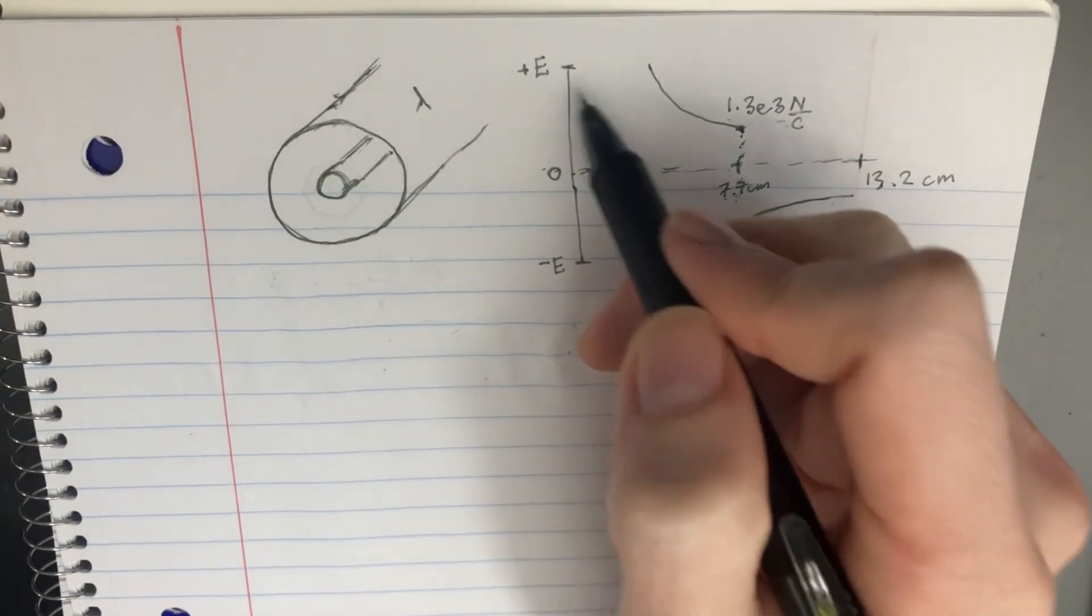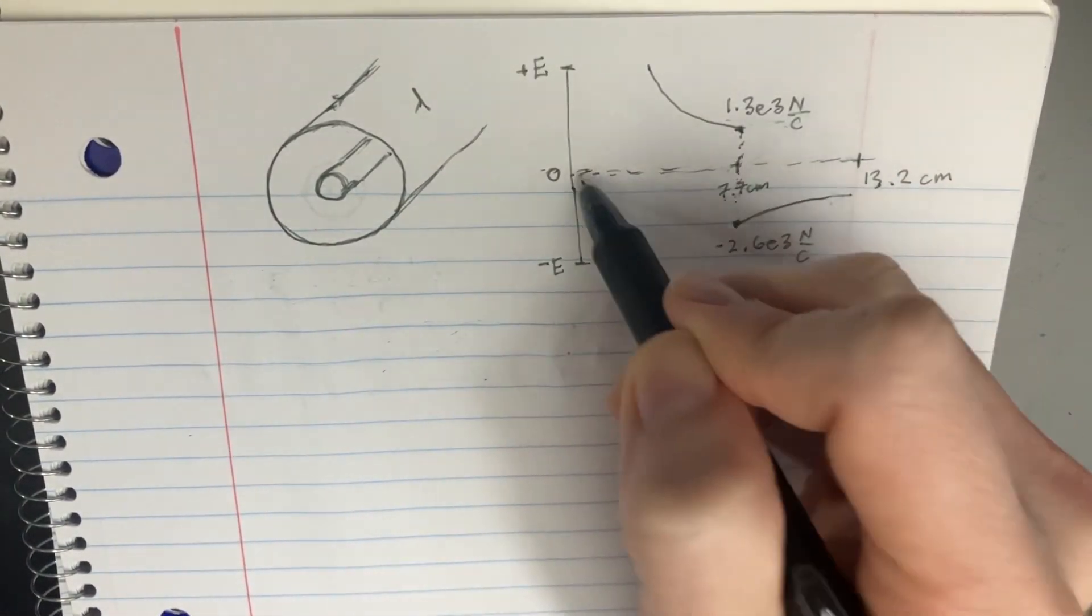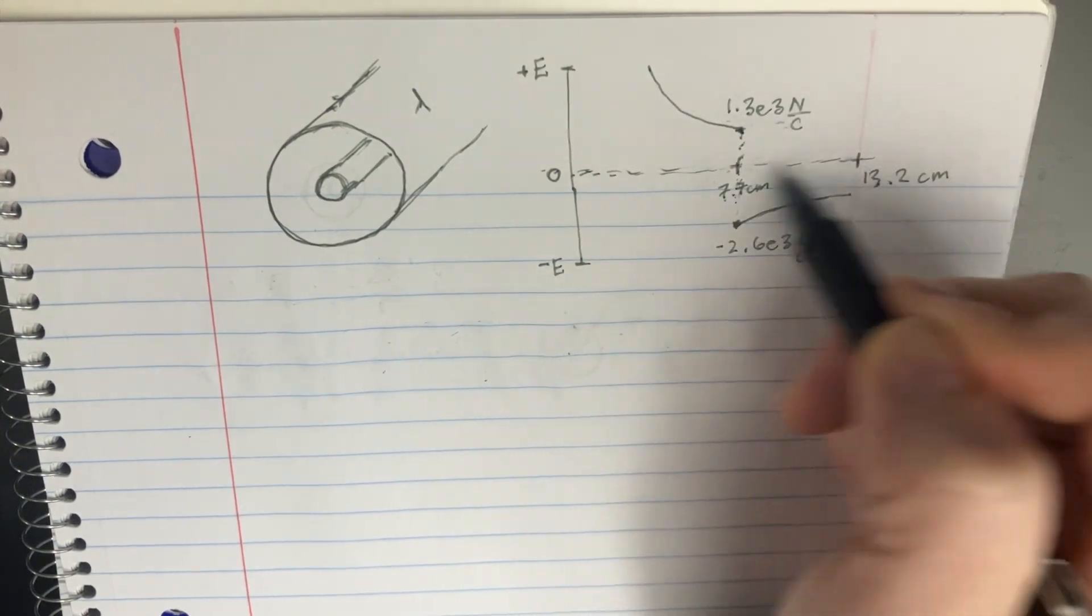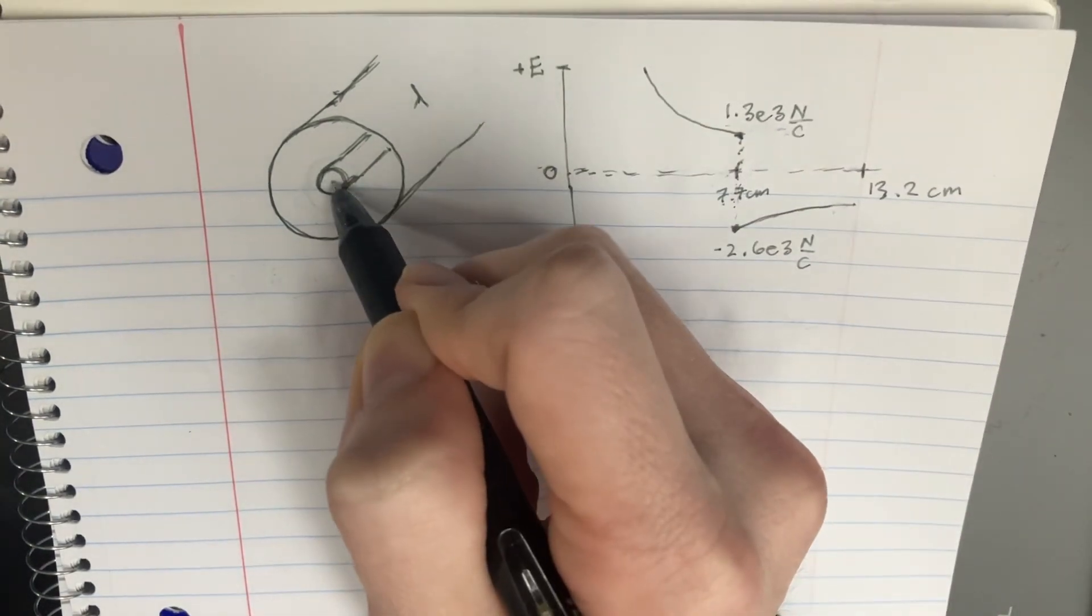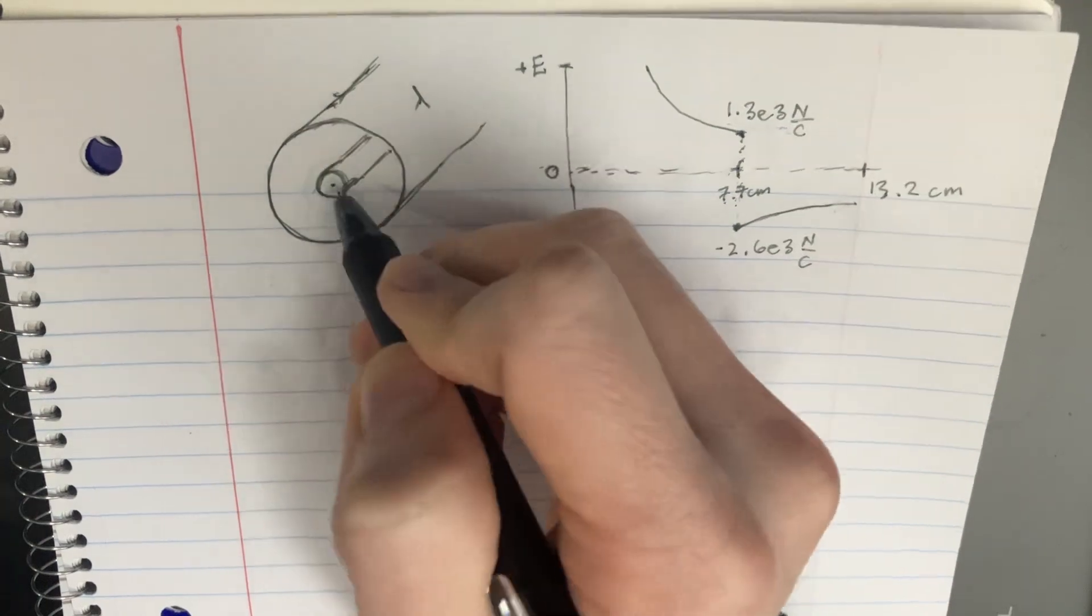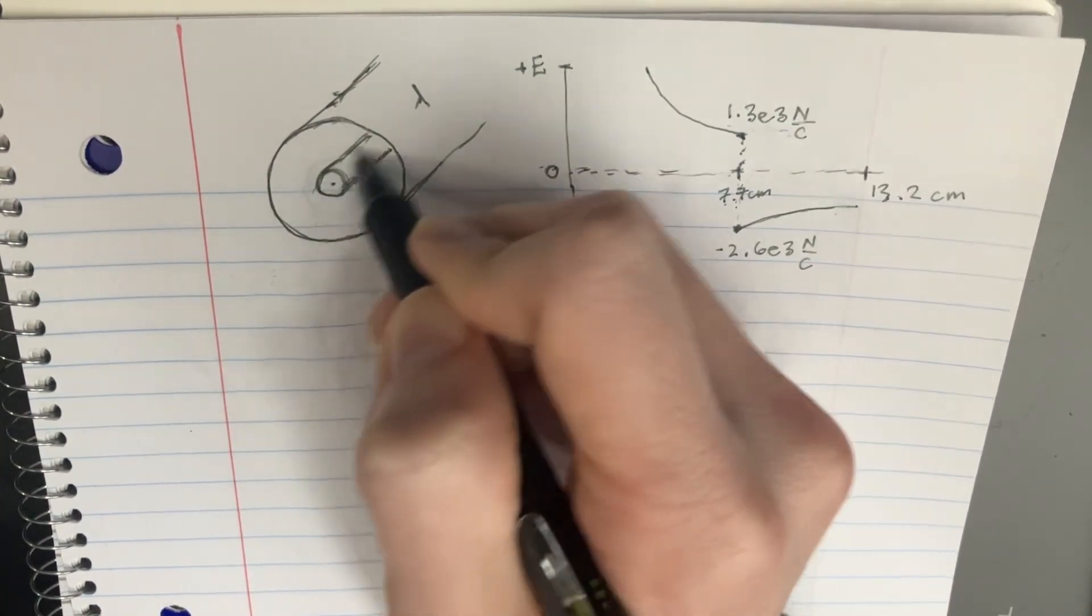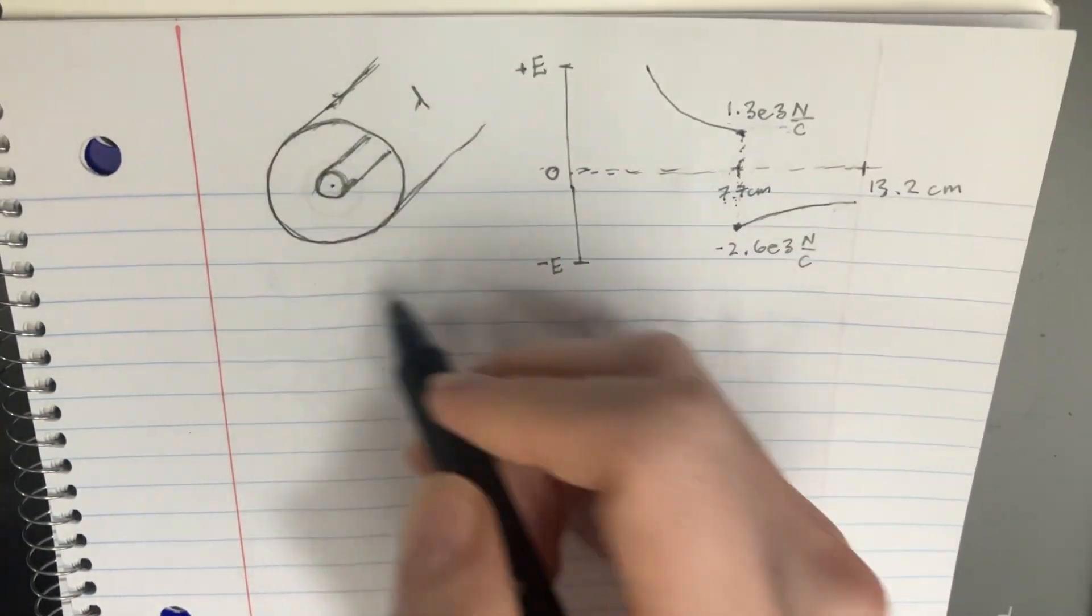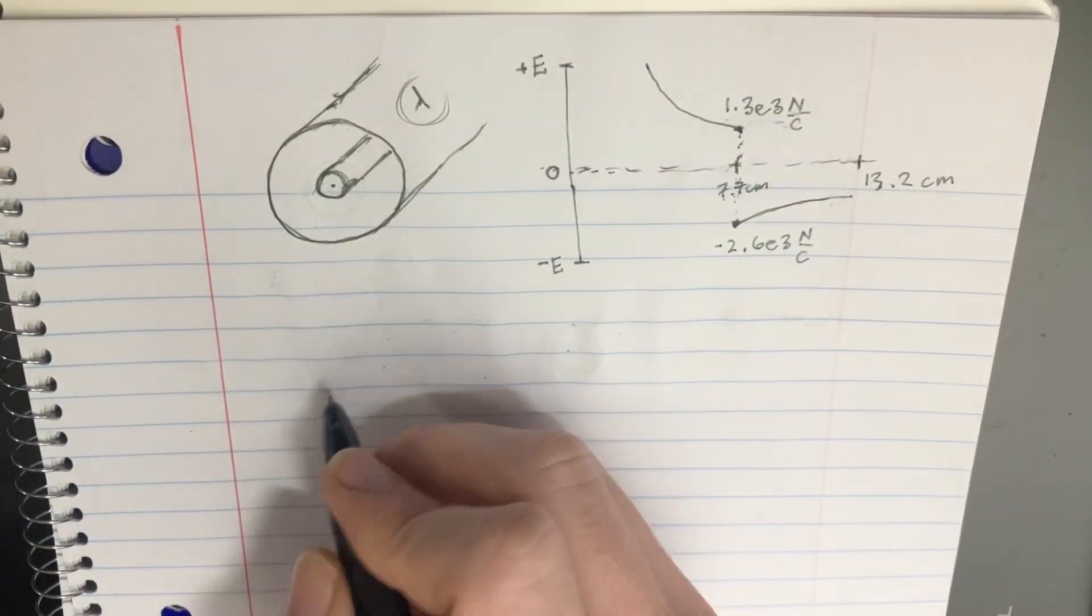So for this problem, we're given the electric field at certain distances from the center of this object right here. And so we've got this cylinder that's in the middle here and an outer shell. We're asked to find the linear charge density.